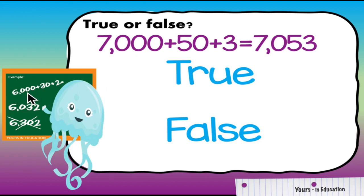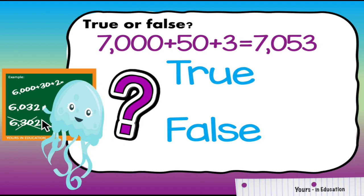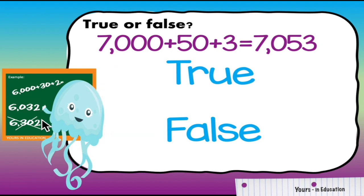For example we have 6,000 plus 30 plus 2 and the options are 6,032 or 6,302. Do you see any difference between the digits of these two numbers? Yes, we have a zero here in the hundreds place. Do we have any hundreds here? No we don't.